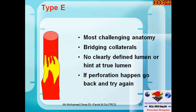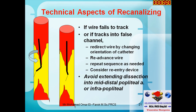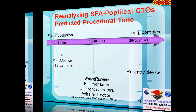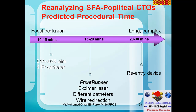Type E is the most difficult — there are many bridging collaterals, no clear anatomy, and penetration is a very difficult experience. If the wire fails, support it with a catheter or balloon, especially hydrophilic catheters which are very useful. Advance the wire little by little, gaining a few millimeters at a time. Success rates drop with more difficult cases, and more time is required for difficult lesions compared to easy ones.